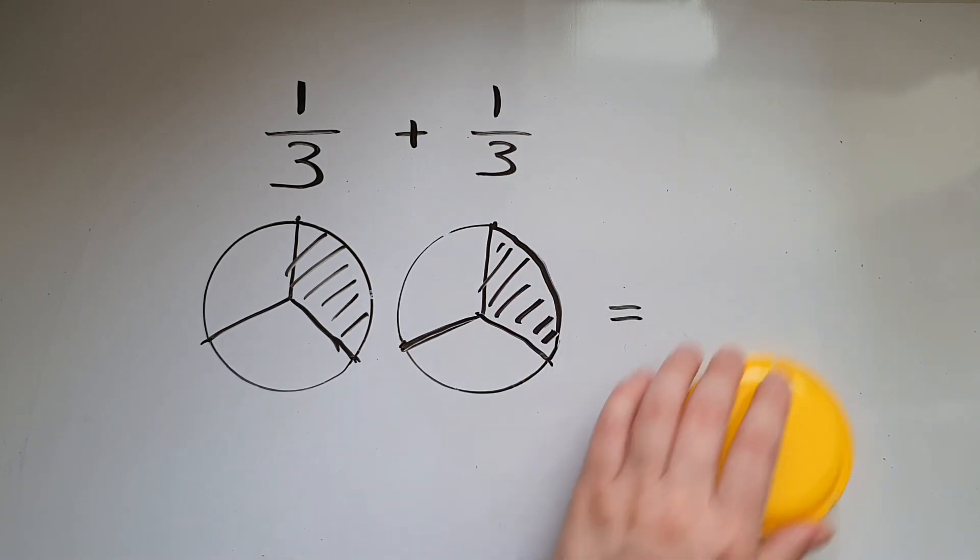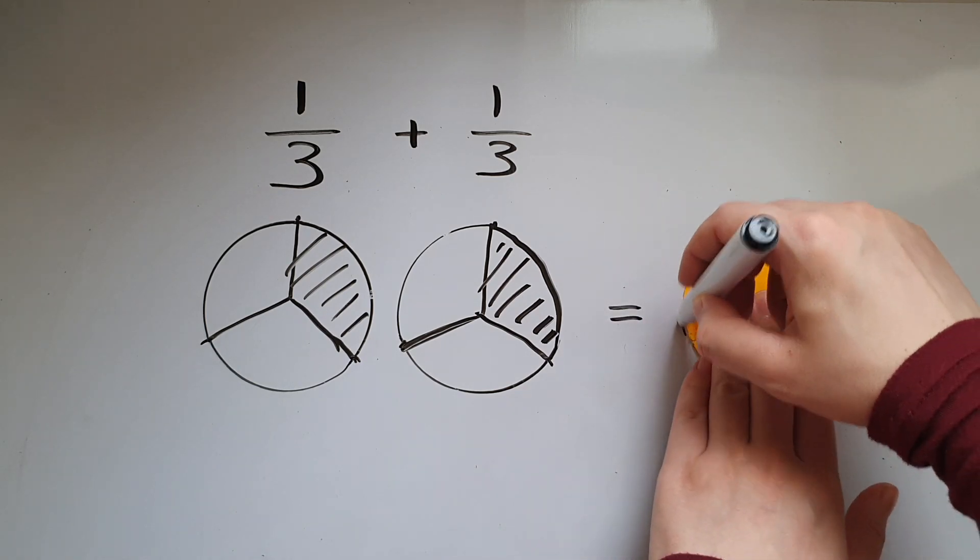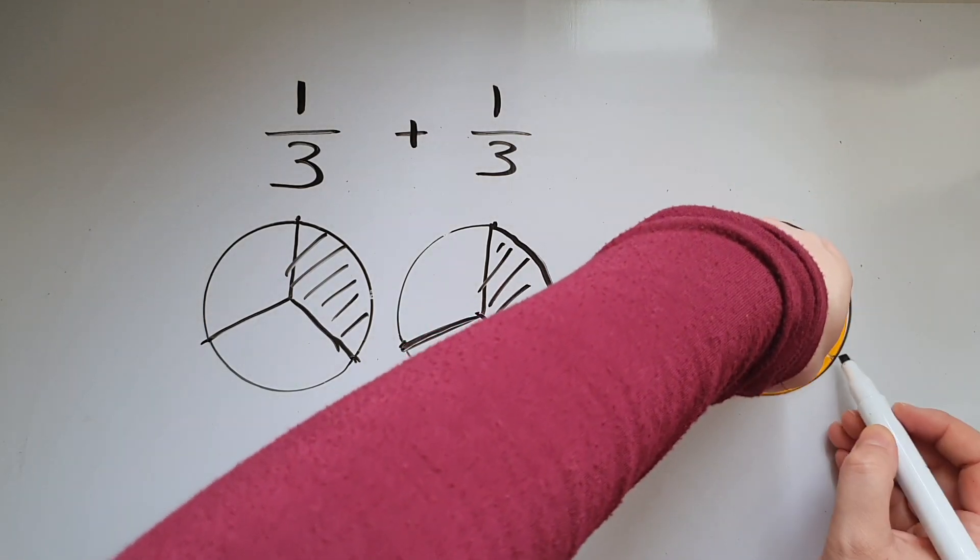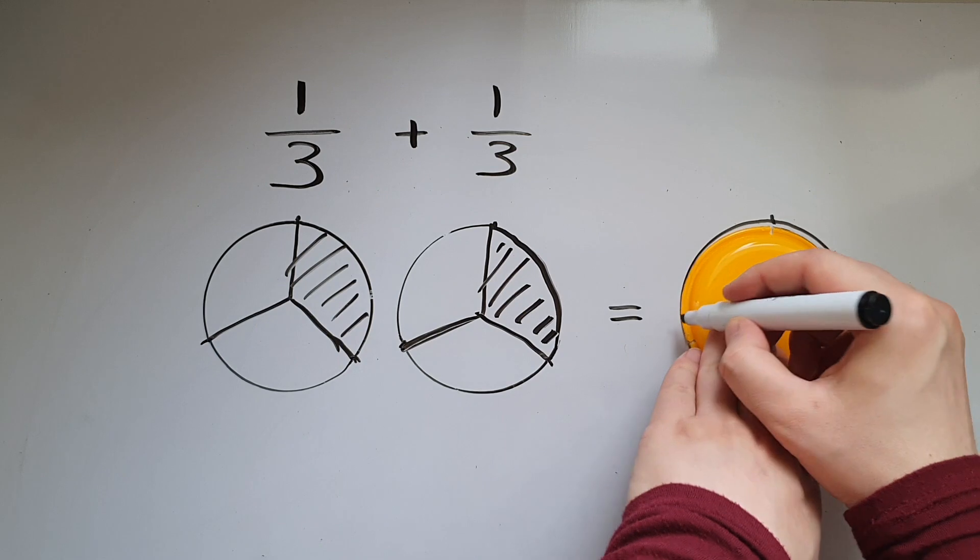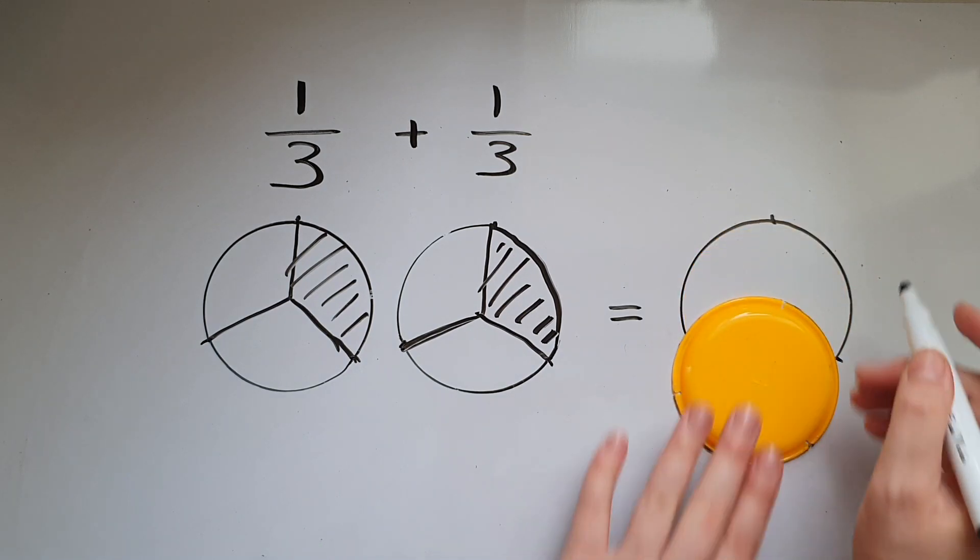So we're taking another slice. So in total, this is going to be 2/3. So 2 out of the three slices.